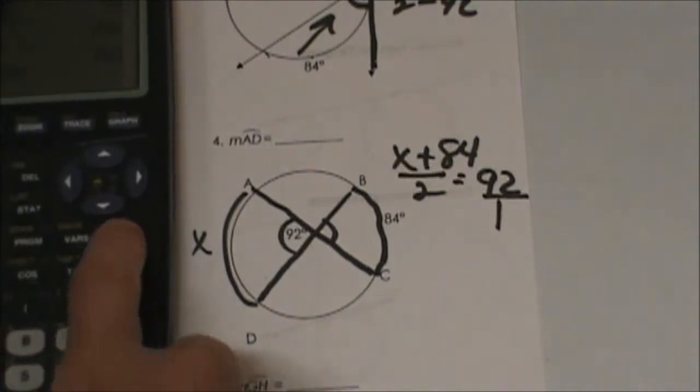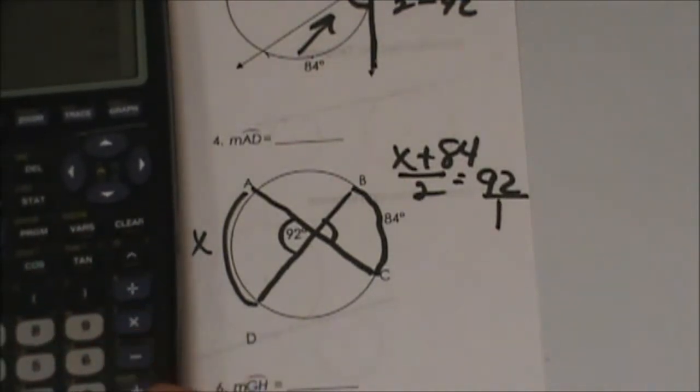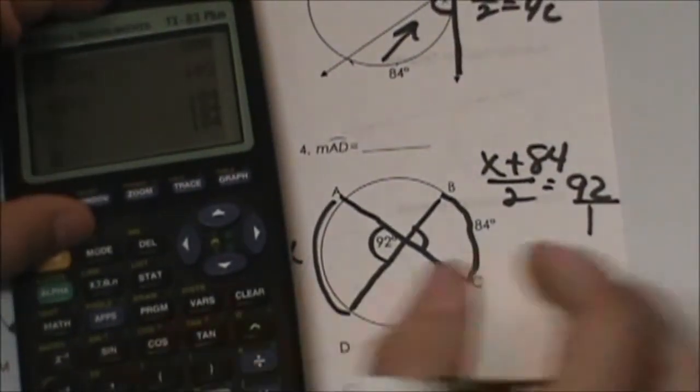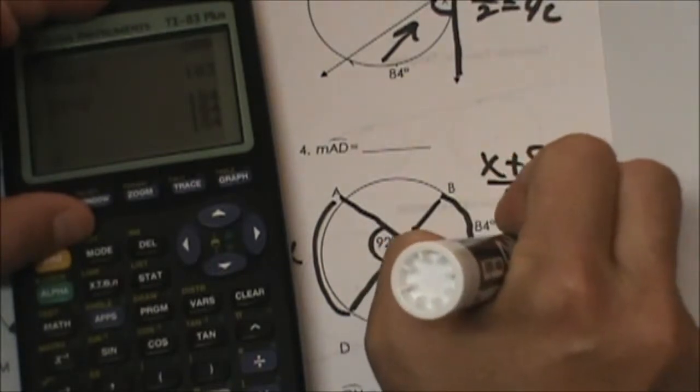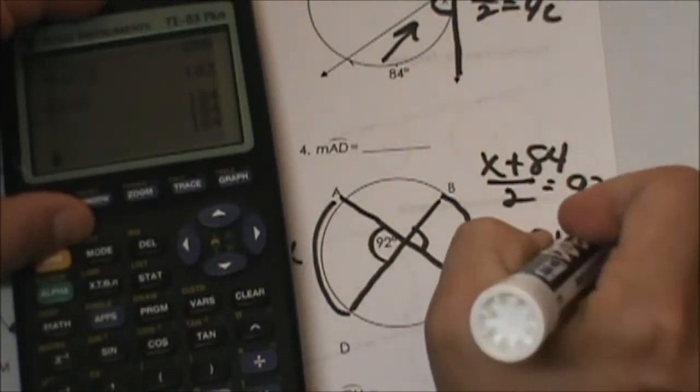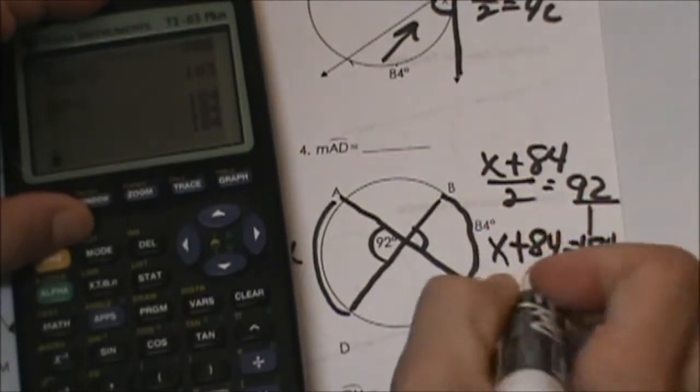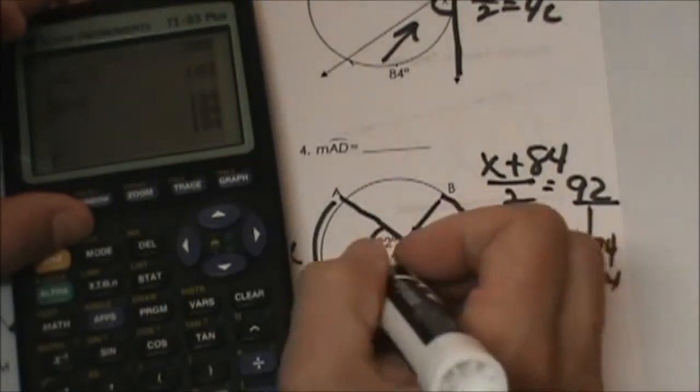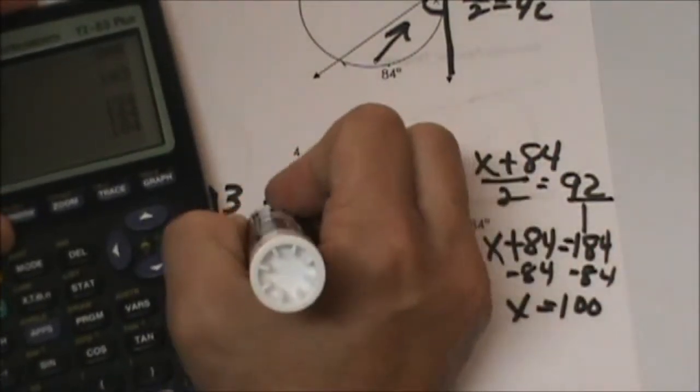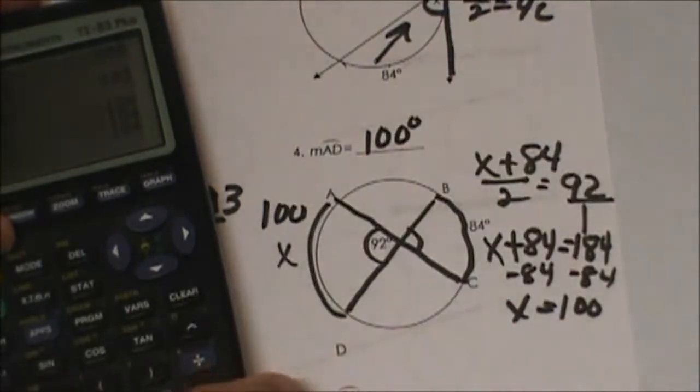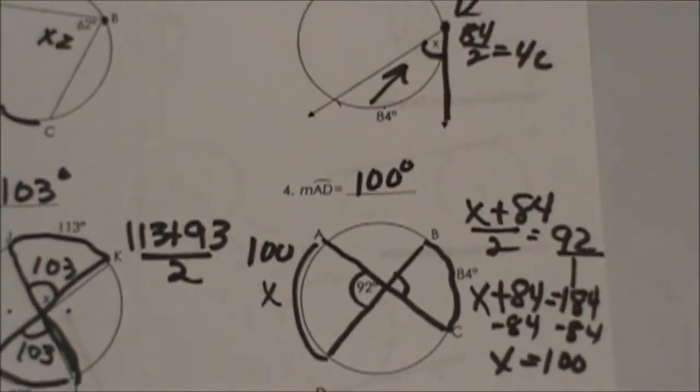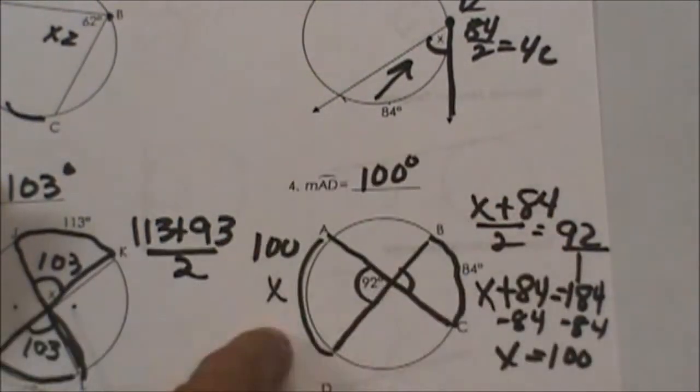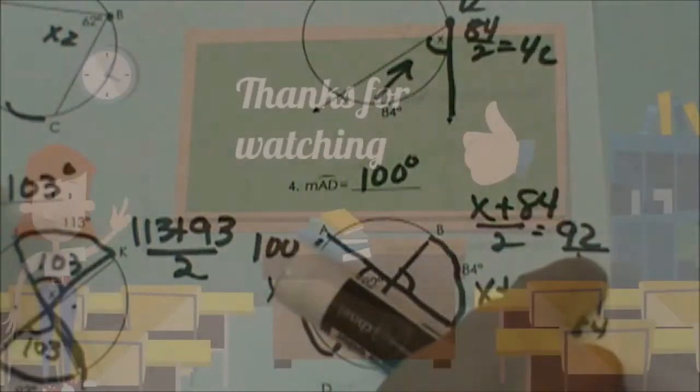So 92 times 2 is 184. So let's jot that down. We got X plus 84 equals 184. Subtract 84. So X is 100. So that means this side is 100. So that is kind of how you would solve it if you are missing an arc. Just use your formula. Arc plus arc divided by 2 is equal to the angle.